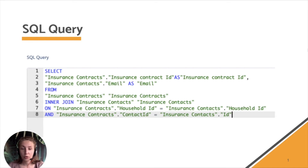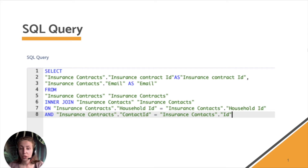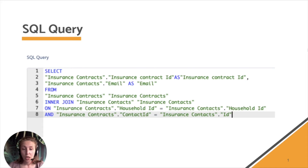Maybe they have their own private insurance too. However, the difficulty is that we don't have an account data extension, perhaps due to the data structure or the organization. So we need to use the above-mentioned DEs — contracts and contacts — and create a relationship between them on multiple fields. We're going to create a relationship based on the household ID and the contact ID field. An email address field can also work in case you use it as a subscriber key to identify your unique subscriber.